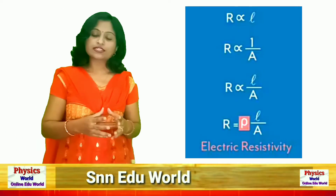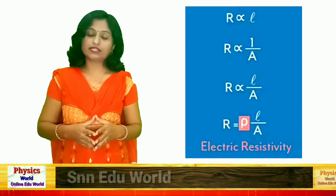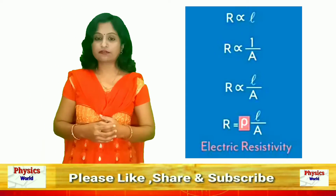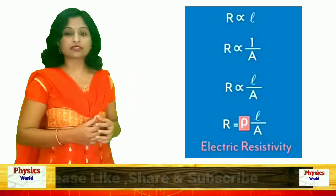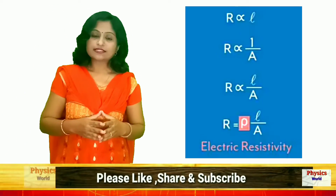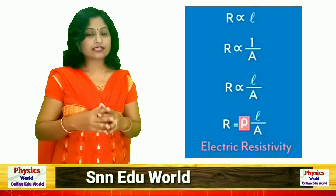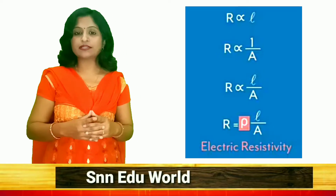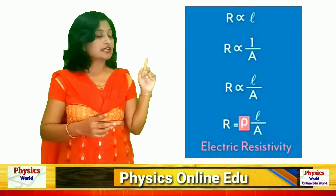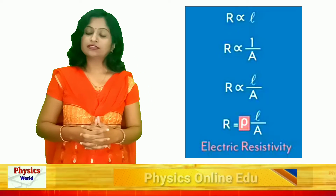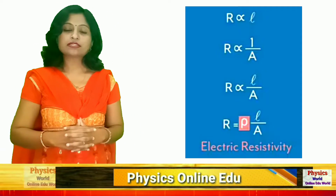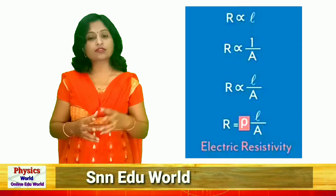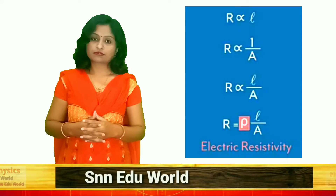The first factor is the length of the conductor, as shown in the equations. Resistance R is directly proportional to the length L of the conductor. That means as the length of the conductor increases, the resistance of the conductor also increases.